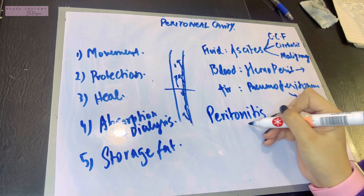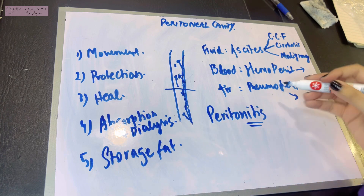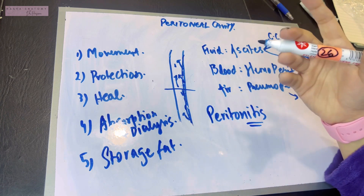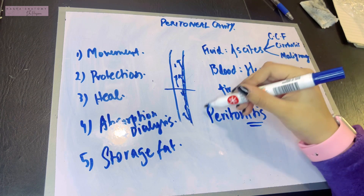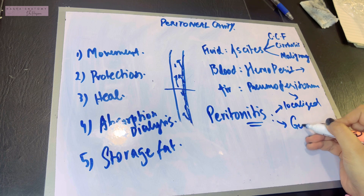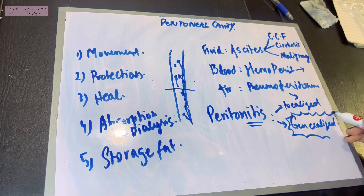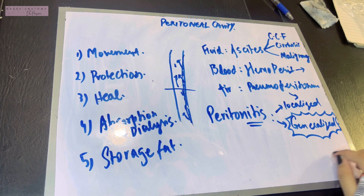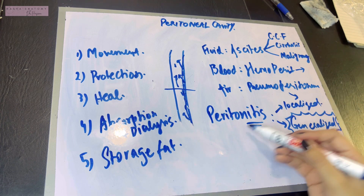The next clinical condition is peritonitis — inflammation of the peritoneum, the layer that covers the abdominal cavity. When it becomes inflamed due to infection or acid, it results in peritonitis. There are two types: localized peritonitis and generalized peritonitis. Generalized peritonitis is extremely lethal and must be treated as a surgical emergency. Localized peritonitis can still be managed, but generalized peritonitis requires emergency intervention.